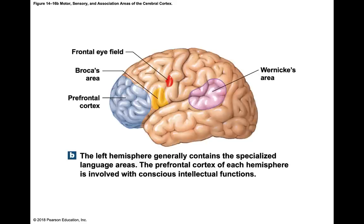Broca's area is in the left hemisphere only and is the motor speech area. It coordinates and regulates breathing patterns and vocalizations, controlling the muscles of the respiratory tract, throat, tongue, cheeks, and lips to allow you to make words. With damage to this area, you would be able to make sounds but not words. A person who had a stroke affecting this area might only produce sounds like 'uh' but not actual words.